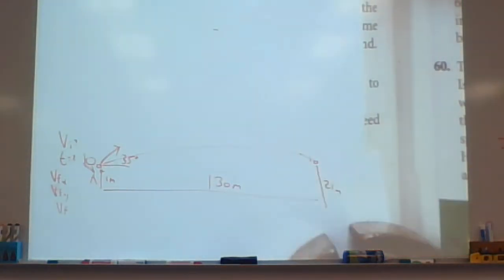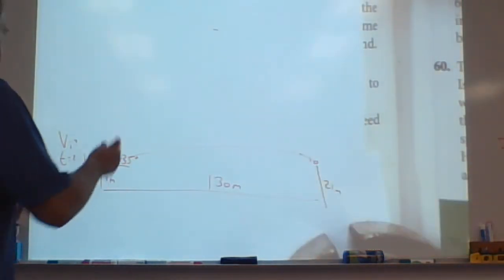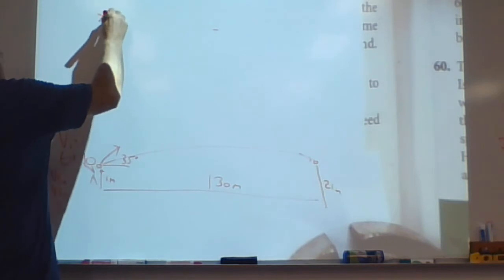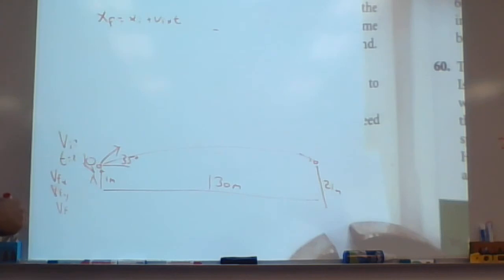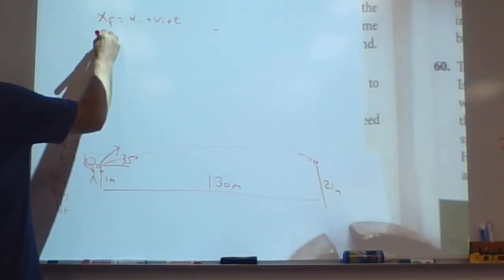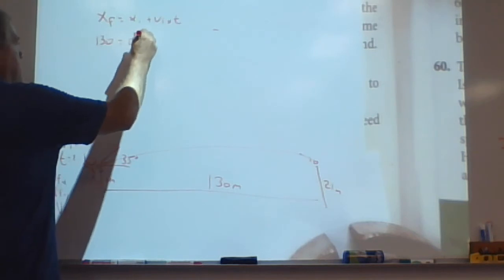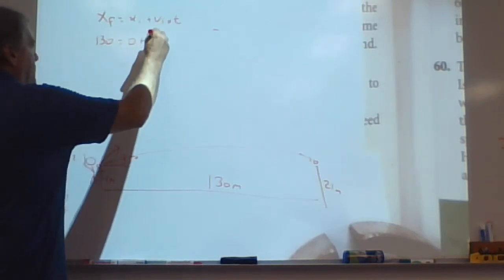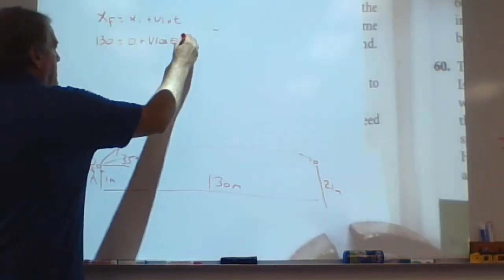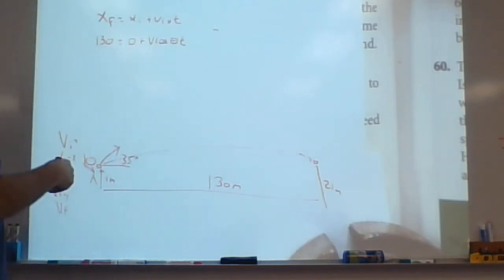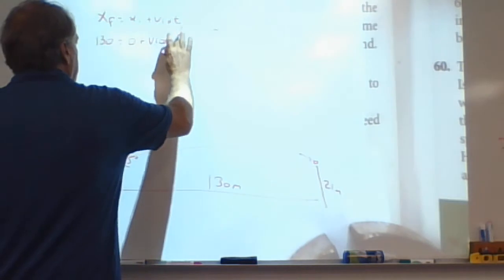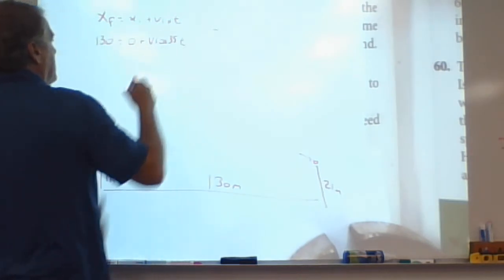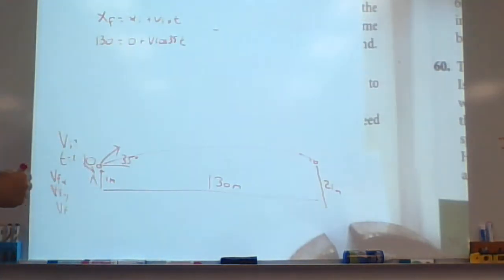All right, let's solve it. No way around this. First thing I would do is use the XF equals XI plus VIXT to see where I am. I know that it's got to travel 130 meters. That's equal to zero plus VIX, which is V cosine theta T. I don't know time. Oh, I can put theta in there. We know it's V cosine 35 T. Let's plug it as much as we know.